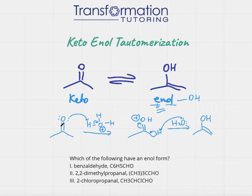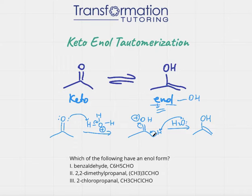What happens in the mechanism is that the oxygen on the carbonyl group takes the hydrogen from H₃O⁺, so it gets protonated, and then the water attacks the hydrogen on the carbon next to the double bond O. Now this step is really important — in order for the enol to form, we must have a hydrogen on the carbon that is next to the double bond O.